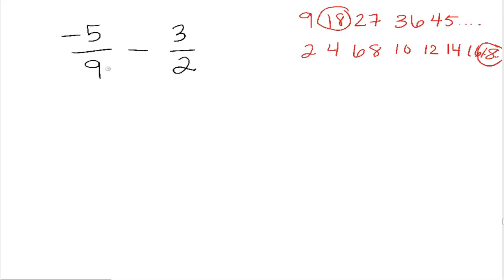So in order to make this 9 an 18, we need to multiply it by 2. And again, whatever we do to the bottom of a fraction, we have to do the same thing to the top. To make this 2 an 18, we need to multiply it by a 9. So we'll also multiply the top by 9. Now in my fraction on the top, I have negative 5 times 2, which is negative 10, over 9 times 2, which is 18, minus on the top of this fraction, I have 3 times 9, which is 27. And on the bottom of the fraction, I have 18.